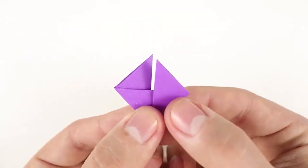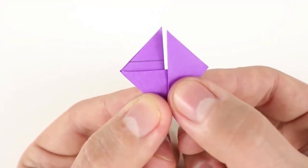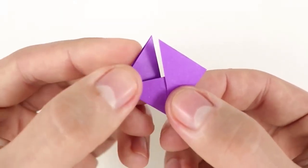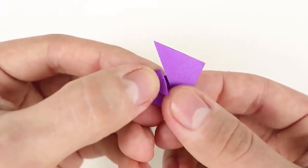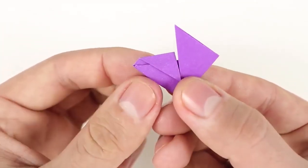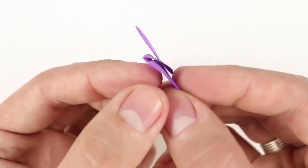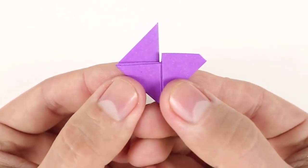To do that, we need to fold the top corner down, about one quarter of the height. More or less like that. Then, turn it over. Repeat the same on the other side.